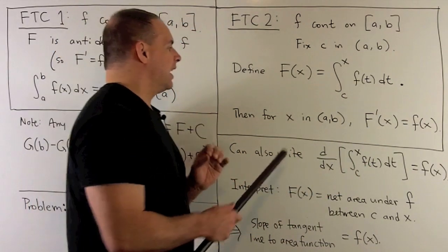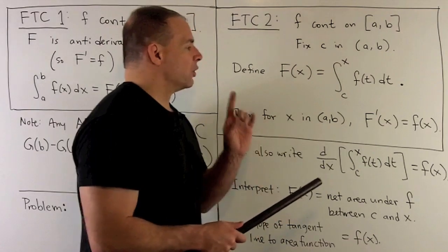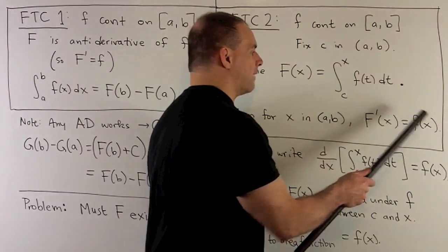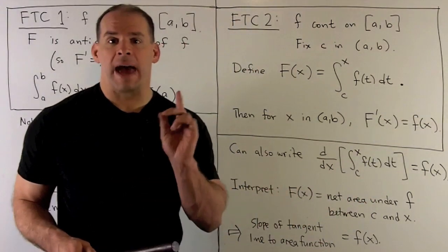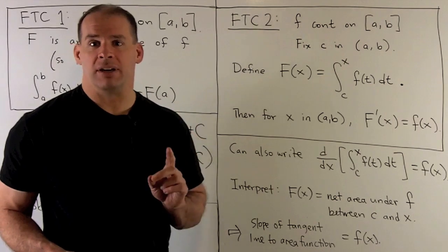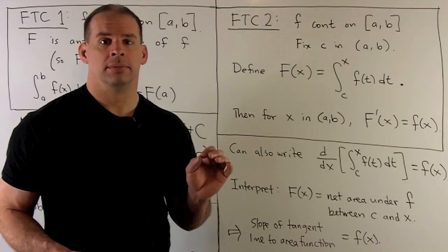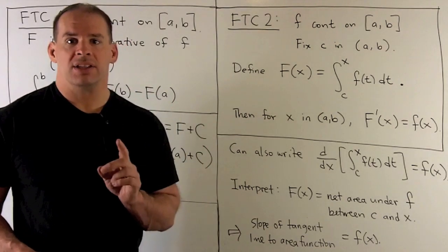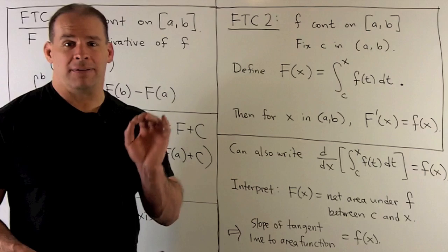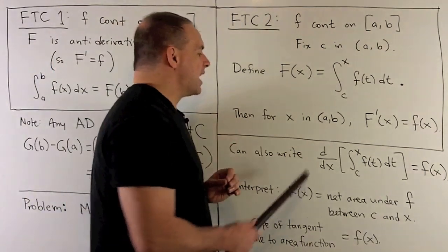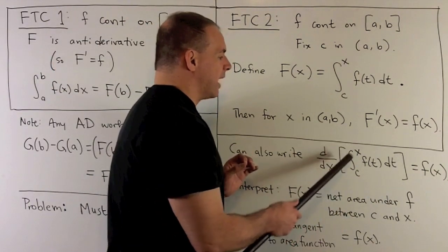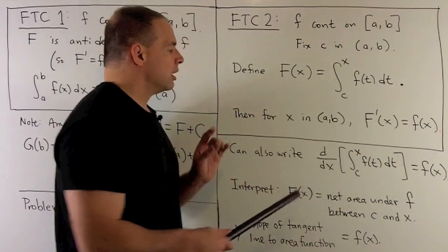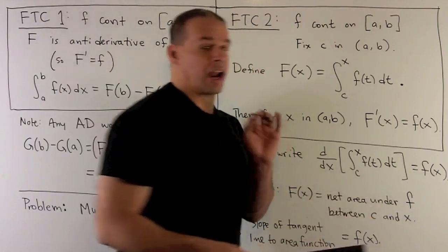The conclusion: if x is in the open interval (a, b), the derivative of capital F evaluated at x is going to equal little f of x. So capital F of x is an antiderivative for little f. Another way to write this without reference to capital F: d/dx of the integral from c to x of f(t) dt, with x in the upper limit, equals f of x.